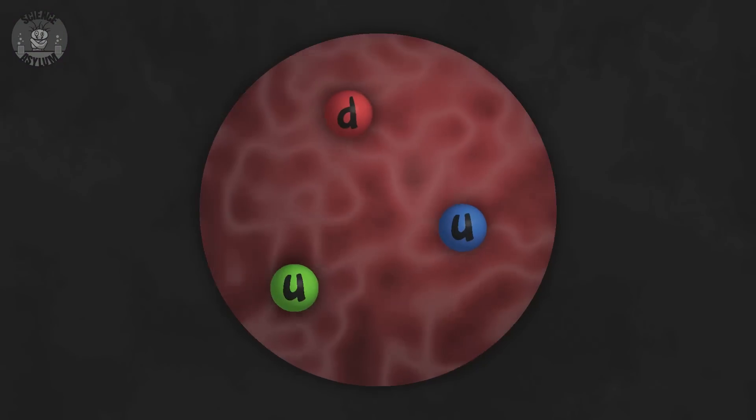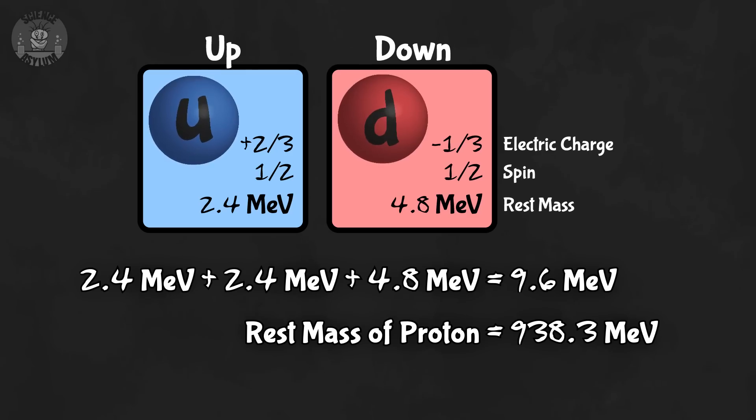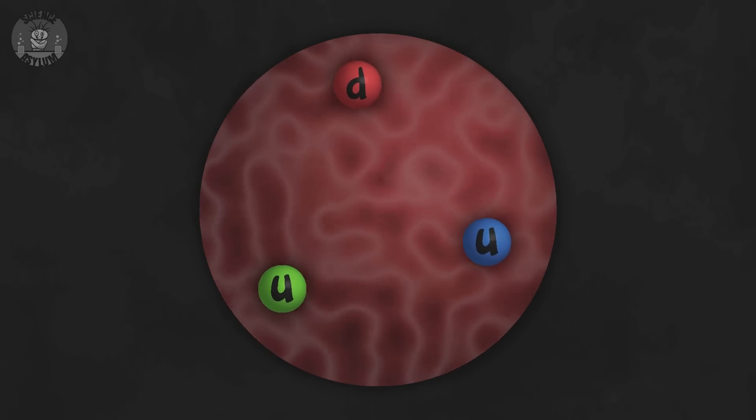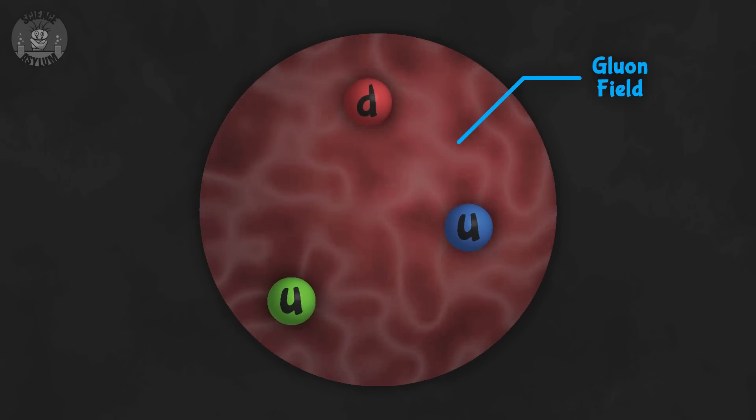Inside one of the protons though, something weird happens. Protons are made of three quarks, but the mass of those quarks only represents 1% of the total mass of the proton. The other 99% comes from the kinetic energy of those quarks, and more importantly, the binding energy of the gluon field holding those quarks together as a proton.